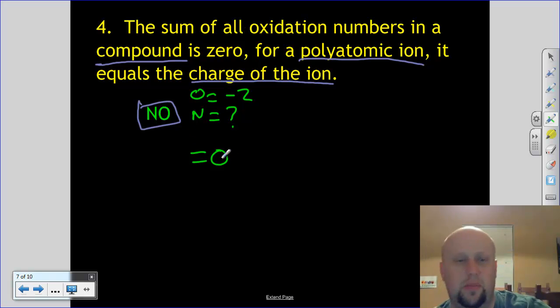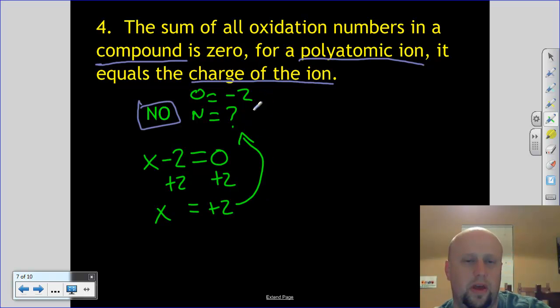So they have to equal zero. I have one oxygen. It has a negative two. And nitrogen is what I'm looking for, and I have one of those. And so what I do is I do a little algebra. Nitrogen is the X. So I solve that algebraically. We add two to both sides. X equals plus two, and that means that my nitrogen is plus two.